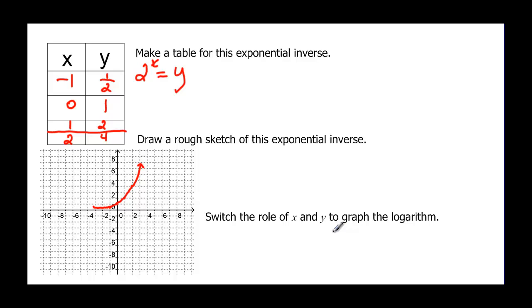Now it says switch the role of x and y to graph the logarithm. If we take those same values that we had in that table and make the y's become x's and the x's become y's. My x's were negative one, zero, one, and two so now I'm going to let those be my y values. So negative one over here in the y value, zero, one, and two.